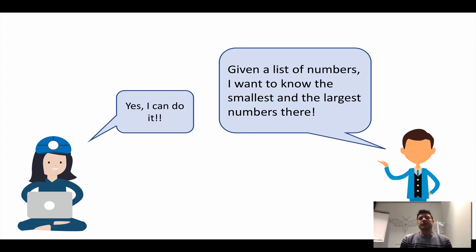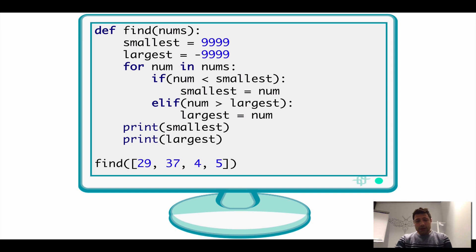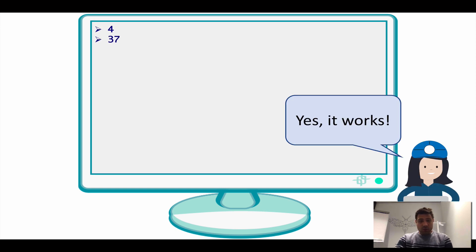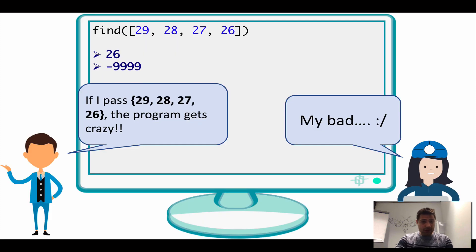We started this lecture by actually showing you that it is quite easy to introduce a bug. We tried to implement a small algorithm that returns the smallest and the largest number. We wrote something like this in Python, tried one example, it seemed to work, but then as soon as we started to think about other cases we saw that it actually failed — there was a bug in there.